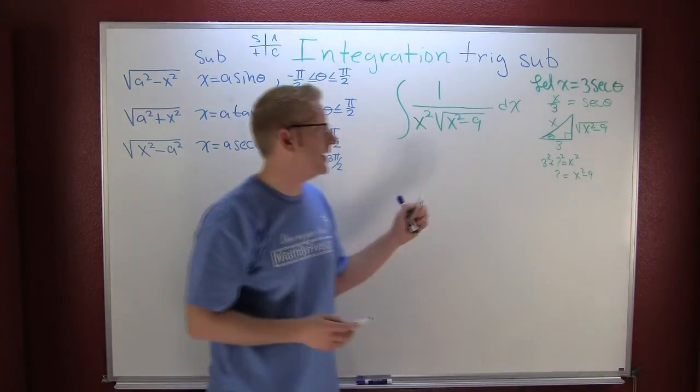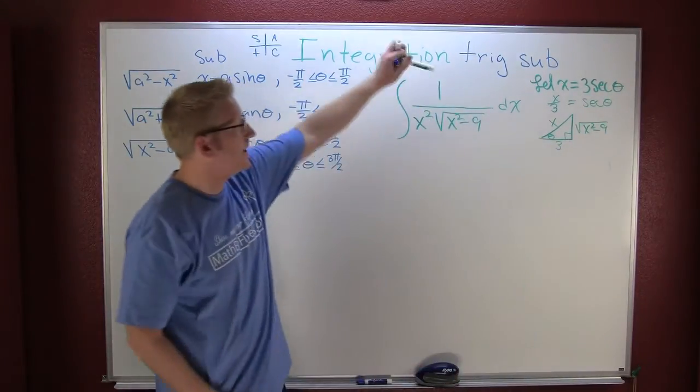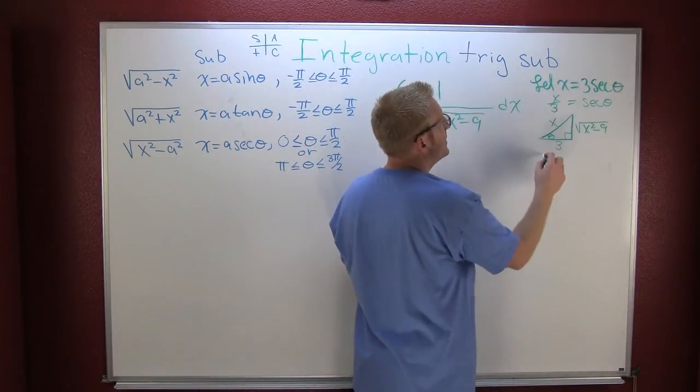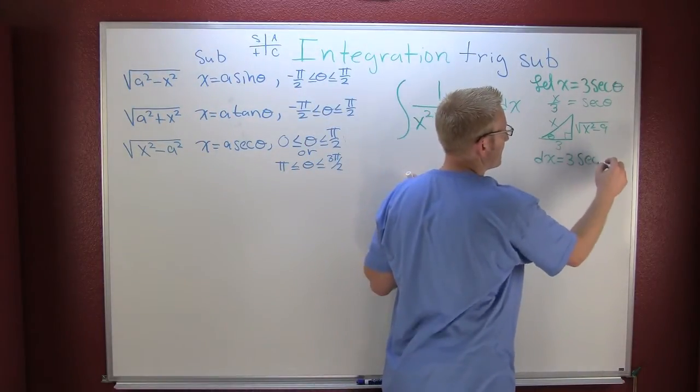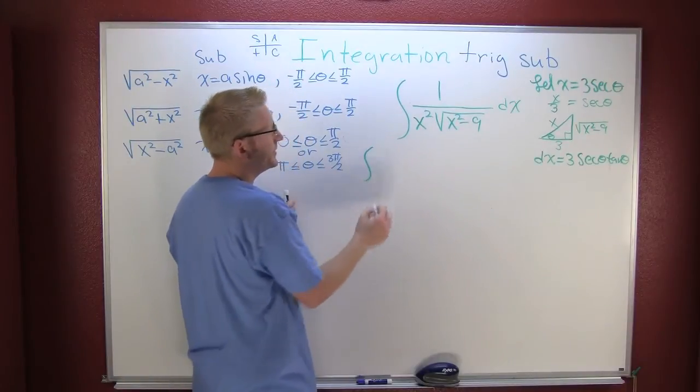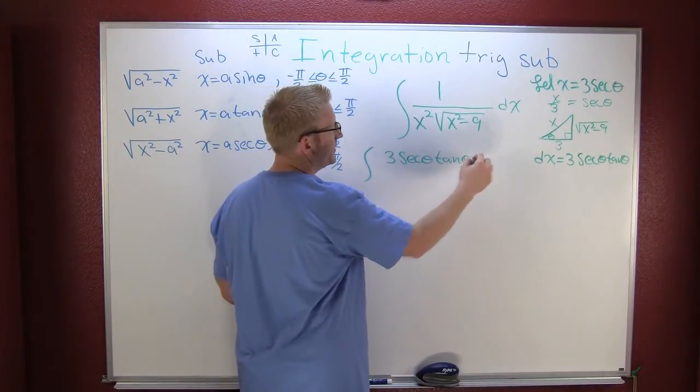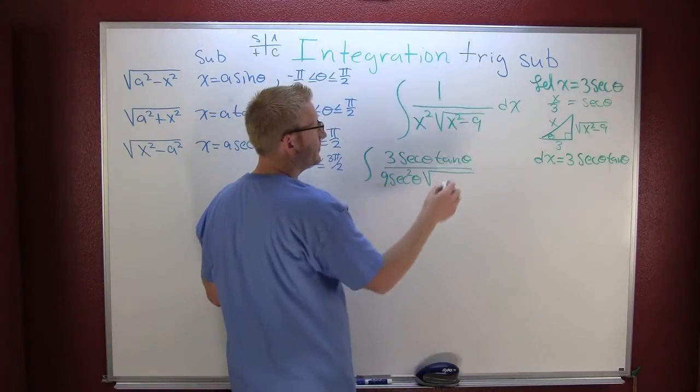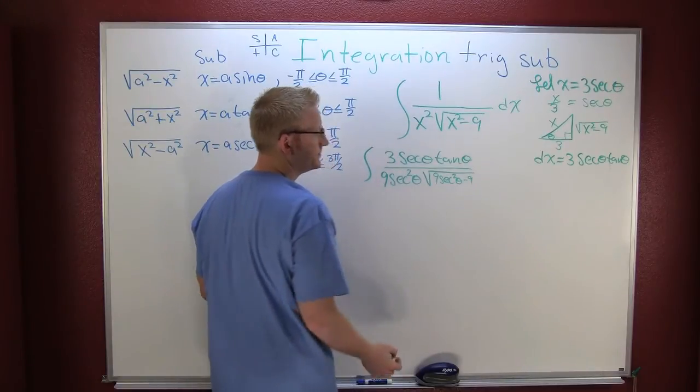Alright, so now that we got that all settled away, that's our triangle we're going to refer back to that later. So right now we need to take a look at, if that's x, I want to make substitutions. I can stick it there, I can stick it there, but I need to find dx. So dx is 3 derivative of secant, secant tangent. So now I have enough to plug it in. My transformed integral is going to be 3 secant theta tangent all over 9 secant squared theta times the square root of 9 secant squared theta minus 9, d theta.